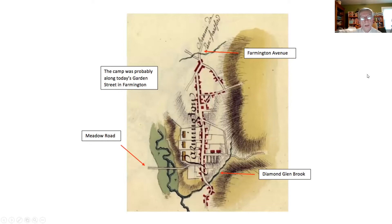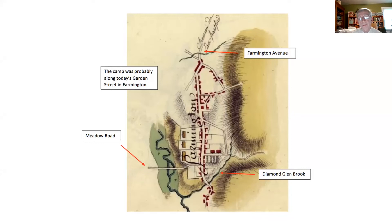The French also brought engineers and cartographers who sketched the route of the march and actually sketched the campsites and towns or villages they camped in. This is Farmington as it was in 1781 — near and dear to my heart because Tunxis Community College is in Farmington and this campsite is literally just down Route 6. You can see Rattlesnake Mountain and the middle of Farmington today with the Congregational churches and Miss Porter's School. This is more or less where they camped.